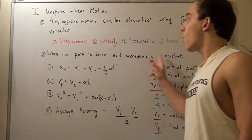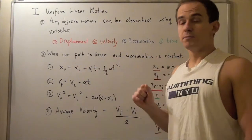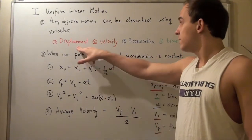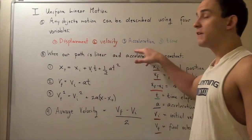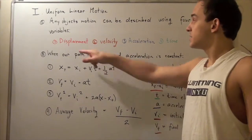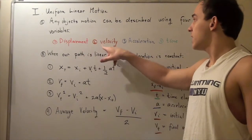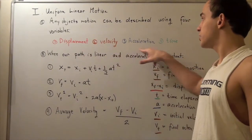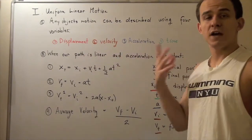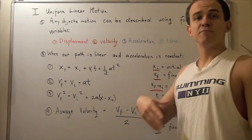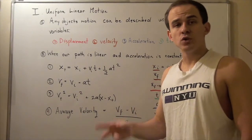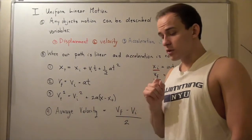Out of these four variables, three of them are vectors: displacement, velocity, and acceleration. They have both magnitude as well as direction.